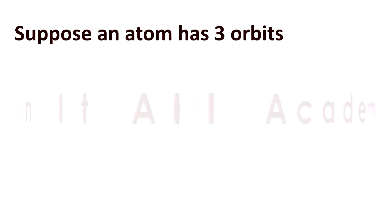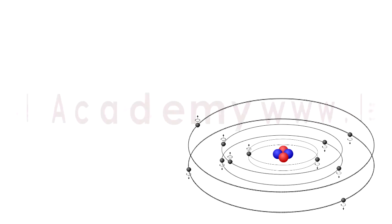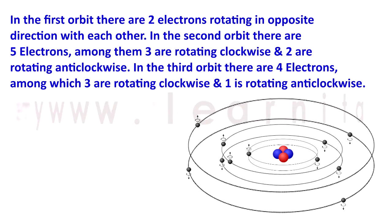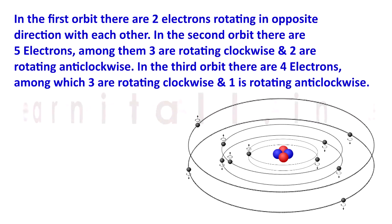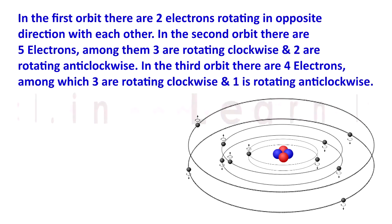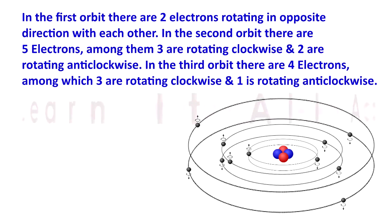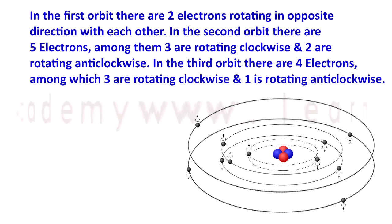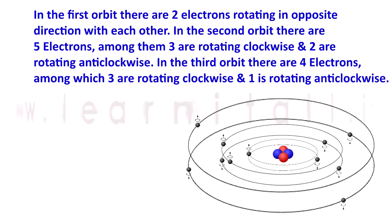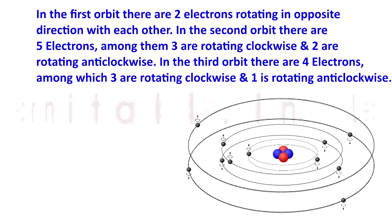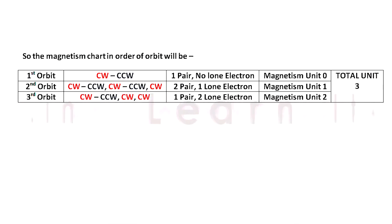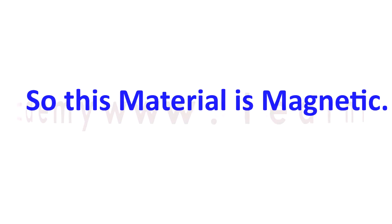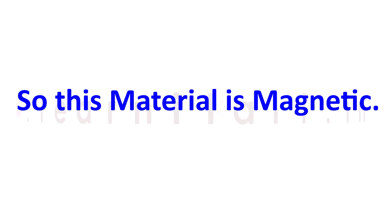Suppose an atom has three orbits. In the first orbit there are two electrons rotating in opposite direction with each other. In the second orbit there are five electrons, among them three are rotating clockwise and two are rotating anticlockwise. In the third orbit there are four electrons, among them three are rotating clockwise and one is rotating anticlockwise. So the magnetism chart in order to the orbit will be 0, 1, 2. So we get total unit is three. So we can say the material is magnetic.